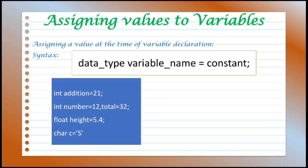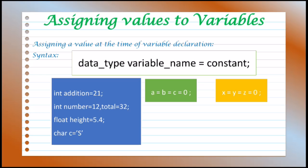The process of giving starting values or initial values to a variable is called initialization. C permits the initialization of more than one variable in one statement using multiple assignment operators. For example, the statement a = b = c = 0 and x = y = z = 0 are valid statements. The first statement initializes the variables a, b, and c equal to 0. The second statement initializes the variables x, y, and z equal to 0.